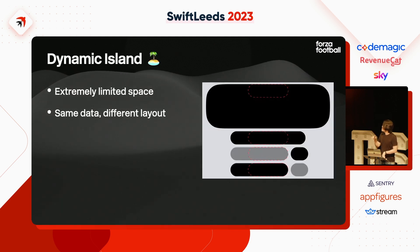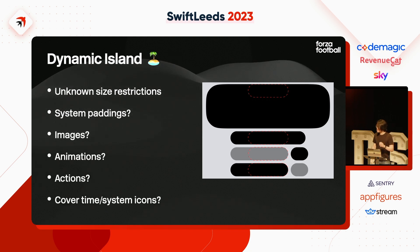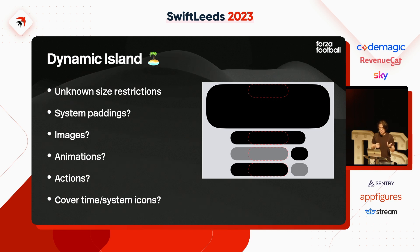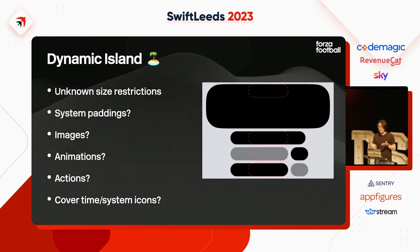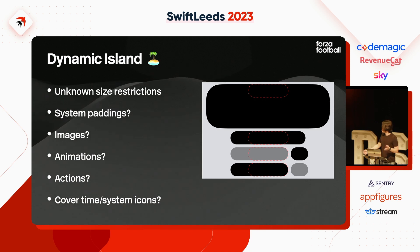For the dynamic island you have very, very limited space. It's the same backing data, just different layout. When we started, there wasn't much documentation, so we had many questions: How big can you go? Are there size restrictions? Does the system add padding? Can you render images or GIFs? Can you do animations? Can you do actions like the now playing live activity's play/pause? And can you cover the system time and battery? There was no information on that, so of course we had to test it.